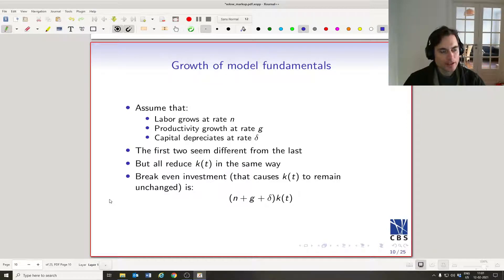So we're going to have some exogenous growth rates. We're going to assume that the labor force is going to grow at rate n. We're going to assume that productivity is going to grow at rate g, and that capital is going to depreciate at rate δ. So the first two seem very different from the last one, but it turns out that they all sort of reduce to, they reduce little k in the same way.